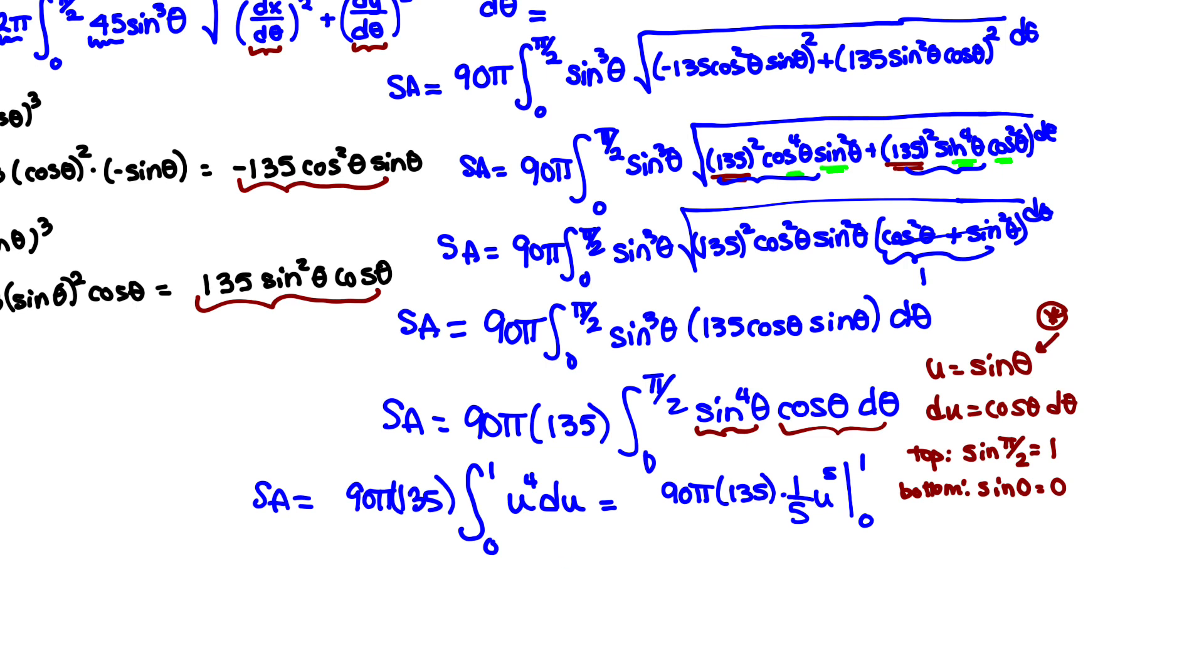Using the fundamental theorem of calculus part 2, we plug the 1 in. That gives us 90π times 135 times 1/5 times 1 to the 5th minus, and when we plug in 0, that just gives us 0. I can cancel that 5 with the 90 giving me 18. And when I take a calculator and multiply 18 times 135, that's giving me 2,430π square units.